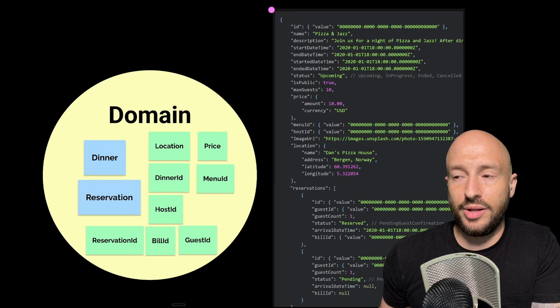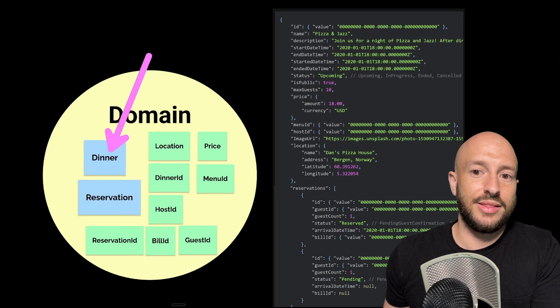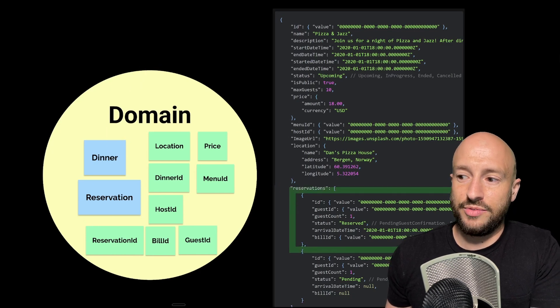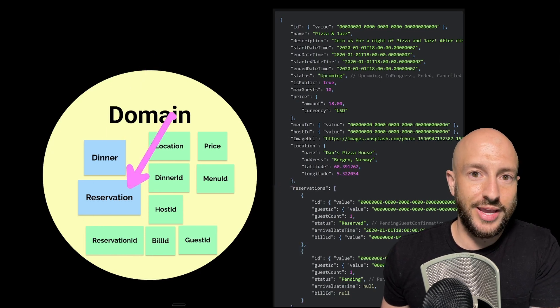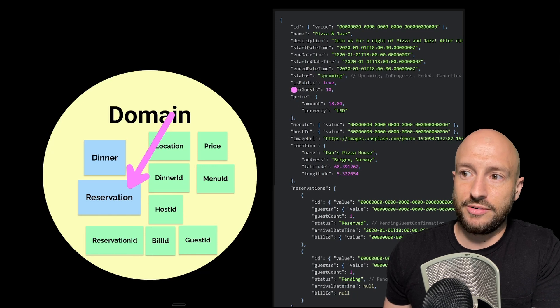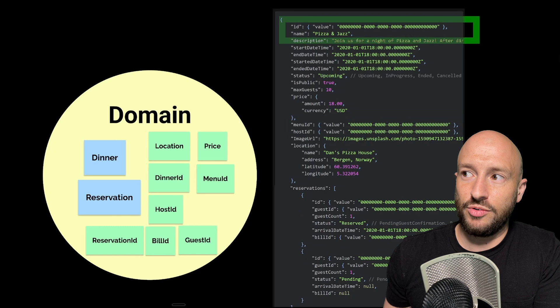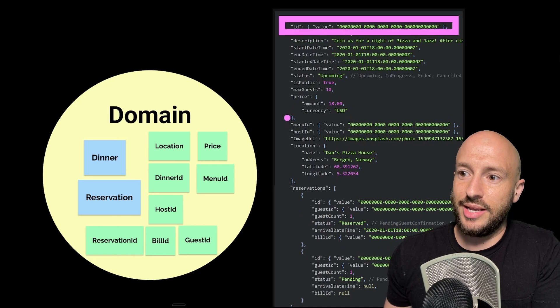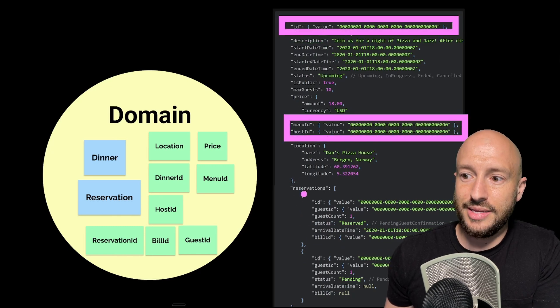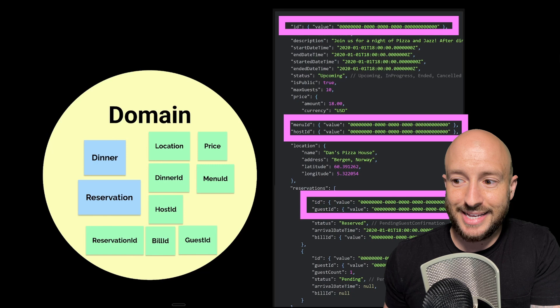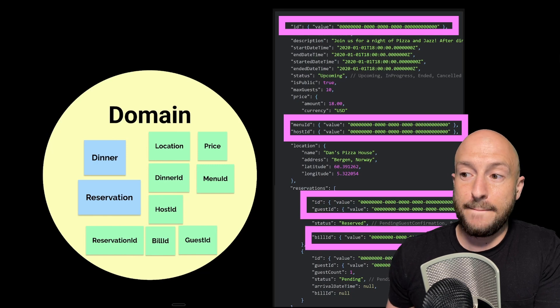Something that's important to note is that when we're talking about domain objects, we're talking about plain old C sharp or Java objects, where we are capturing both data and behavior. So going back to our example, this entire thing is the dinner entity, each one of these reservations is the reservation entity. Then we have here different value objects, like the price, the location, and we also have all the various IDs. So the dinner ID, the menu and host ID, the reservation and guest ID, and the bill ID.